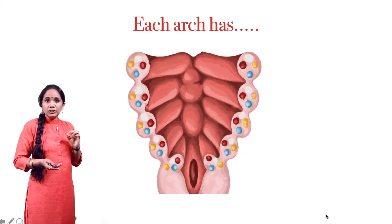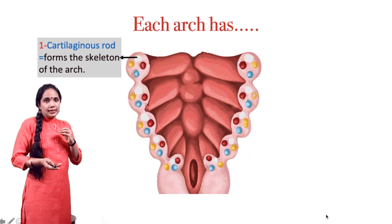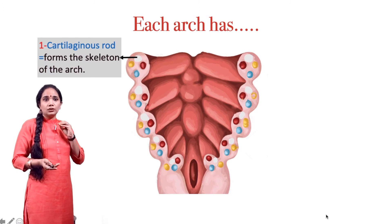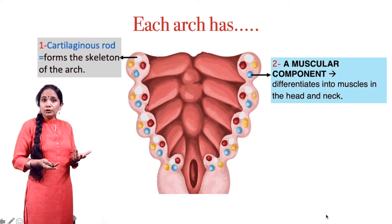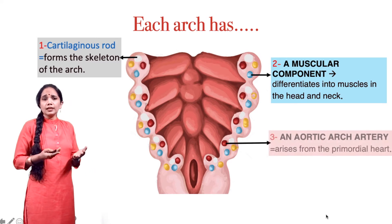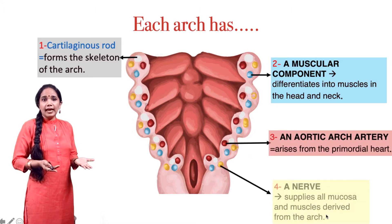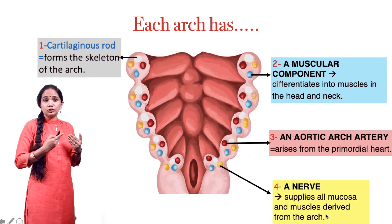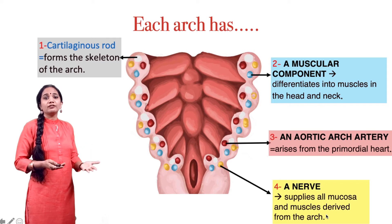In each arch we have four main structures. First, there is a cartilaginous core or rod which gives rise to the skeletal remnants of the arch. Each arch also has a muscular component formed from the mesoderm, which gives rise to the muscles of the arch. It has an aortic arch artery which supplies the structures within the arch, as well as a particular arch nerve which is specific for each arch and supplies only the structures derived from that arch.